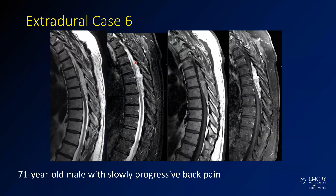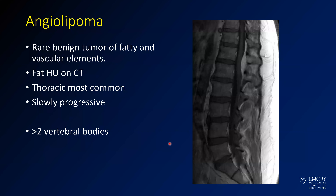One final extradural lesion — these are very rare: angiolipomas. If you see progressively expansile masses with fat signal in the dorsal fat, some enhancement, but bright on pre-contrast, think angiolipomas. These are rare benign tumors involving fatty and vascular elements. You'll see fat density on CT. They're most common in the thoracic spine and tend to span two or more vertebral bodies.